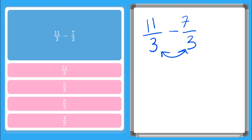And I just subtract my numerator. So 11 minus 7. I keep my same denominator down here, 3. And 11 minus 7 is 4 over 3. So there's my answer. Nice.